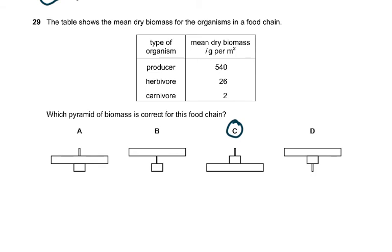Question 29: the table shows the mean dry mass of organisms in a food chain. Producers mean dry biomass was 540 grams per meter squared, herbivore was 26, carnivore was 2. Which pyramid of biomass is correct for this food chain? The pyramid of biomass means the mass, so 540 would be the biggest, then it gradually decreases, 26 and then 2. That is why C was the answer.